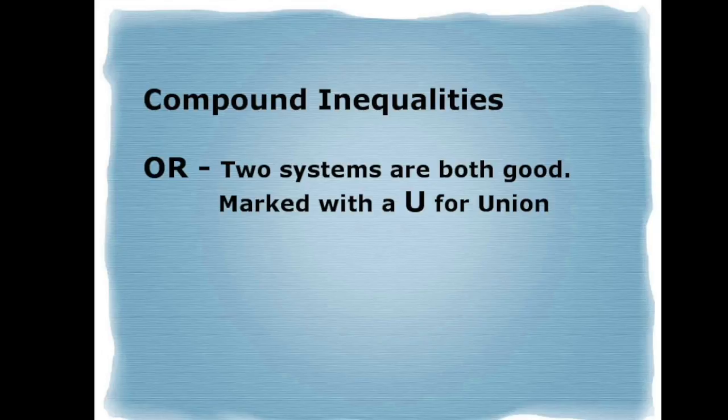Today we're going to solve and graph compound inequalities. The first compound inequality is an OR compound inequality. That means two systems are both valid and they're marked with a U for union. Everything that you graph is true.